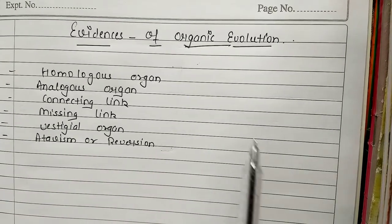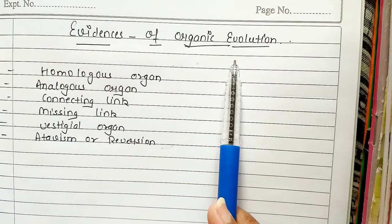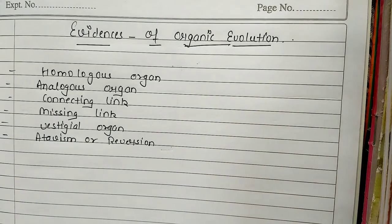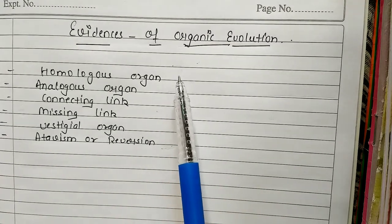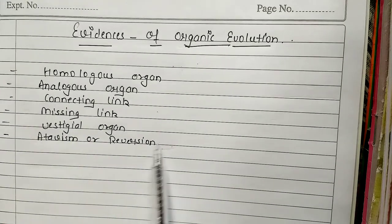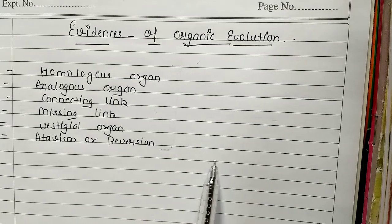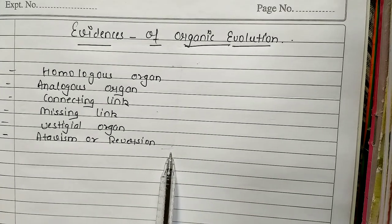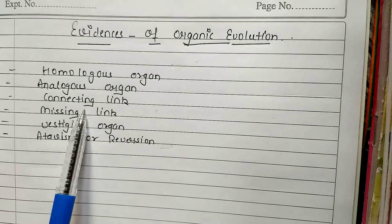Today we will do the next chapter, Evidences of Organic Evolution. This chapter is in BSA 3rd year. In this chapter, we have a lot of evidence like biogeographical evidence. There are 5-6 evidences, but the main topic depends on these 6 definitions. We have to study these 6 topics, and you have to study the 12th main, interesting, and easy topic. There are small definitions.